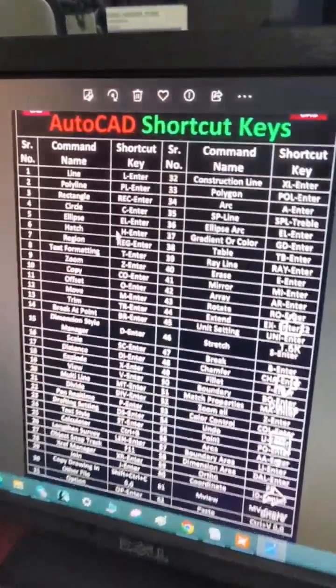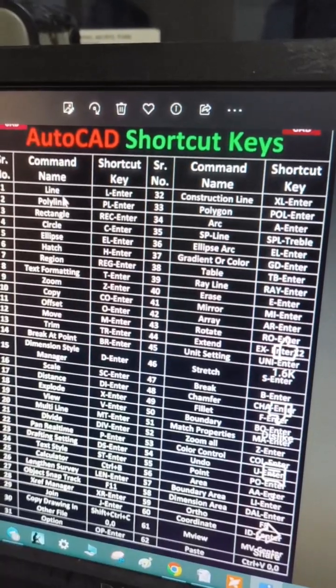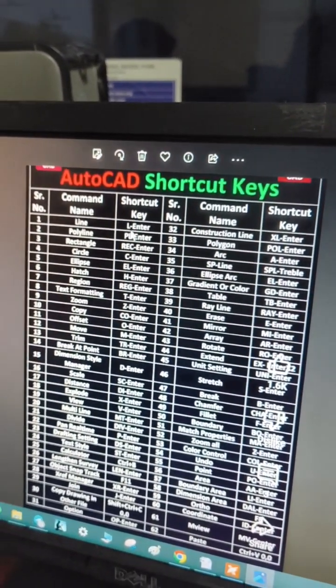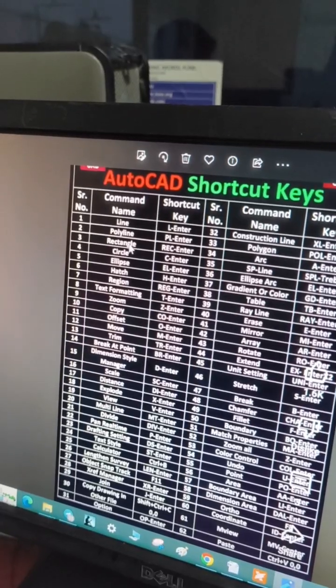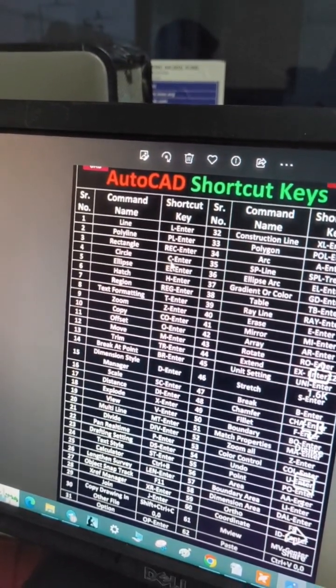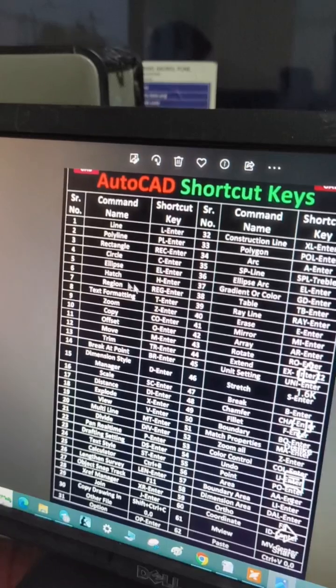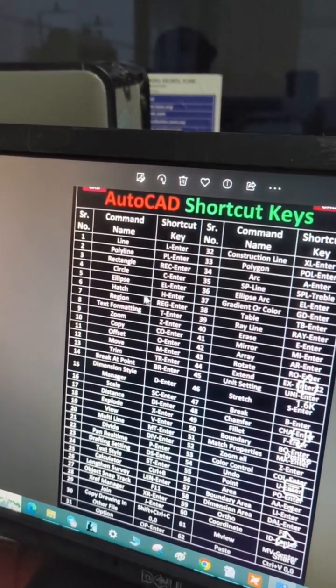These are the commands in AutoCAD. First is line command, shortcut is L enter. Polyline: PL enter. Rectangle: REC enter. Circle: C enter. These are the basic commands we are using in AutoCAD.